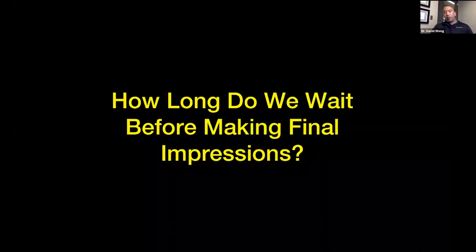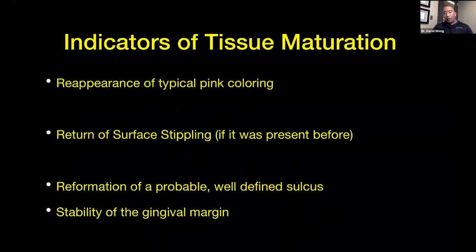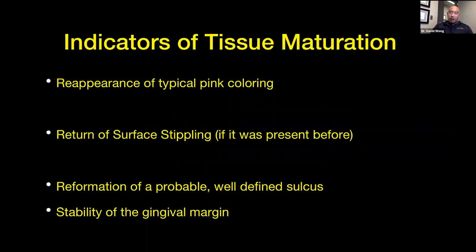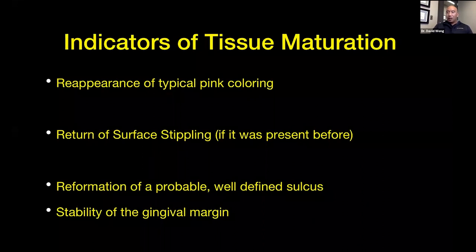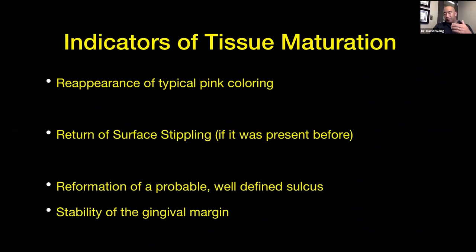How long do you typically wait before making final impressions? My general answer is 12 weeks. But since every patient is different, things you can look for: return of gingival health — pink color, nice firm density, you don't want spongy tissue — return of stippling if it was there before, reformation of a probable sulcus, and basically stability of the crown margins. You'll know this because you'll have the patient in provisionals.